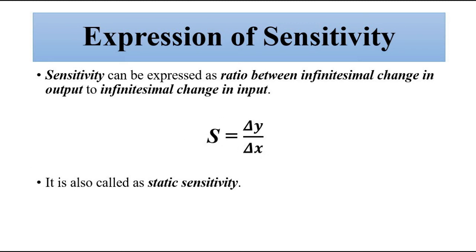This parameter is very important because it defines how much change in output will be brought about by a certain change in input. Sensitivity is always specified in the specification sheet for a particular measurement device, whether it is a temperature sensor, pressure sensor, or any other sensor. In cases where the device behaves differently across ranges, the specification sheet will indicate the sensitivity for each range — beyond a certain point the sensitivity will be different.